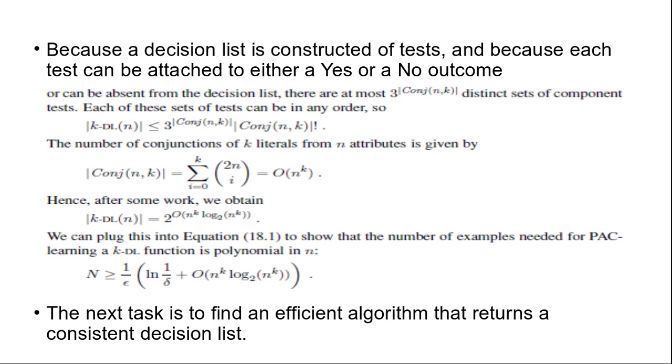To show the number of examples for PAC learning k-DL is 1 over epsilon times 1 over delta plus N to the power K log NK. Therefore, any algorithm that returns a consistent decision list will PAC-learn a k-DL function in a reasonable number of examples for small K.